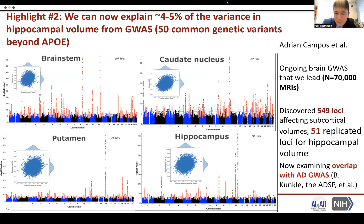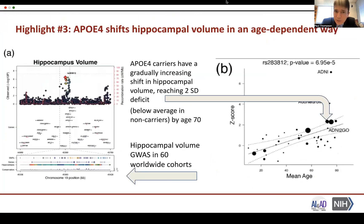We can now explain about 4% of the variants in key biomarkers, hippocampal volume in particular. We've also been examining overlap between these markers—20 hits in the hippocampus—with Brian Kunkel and the ADSP's GWAS of Alzheimer's disease. Most of these genes are age-dependent in their effects. Examining 60 worldwide cohorts for the influence of APOE4 genotype on hippocampal volume, you see a progressively increasing effect as age progresses, lending a lot of insight into how APOE exerts its effect and when.